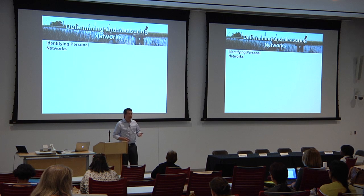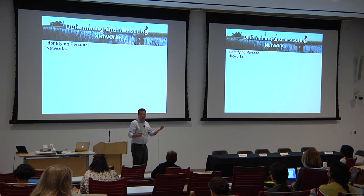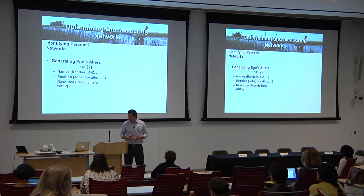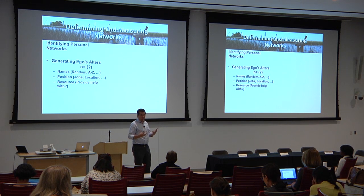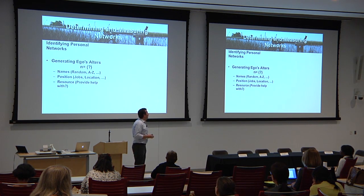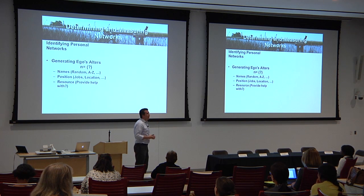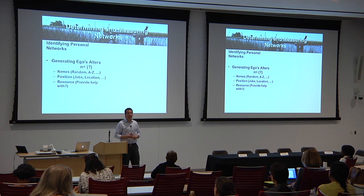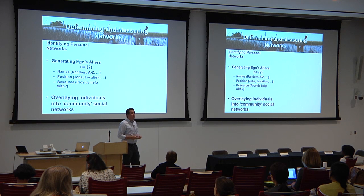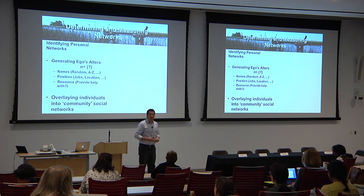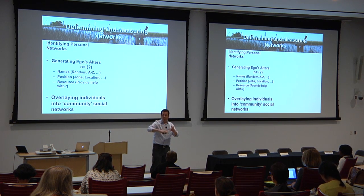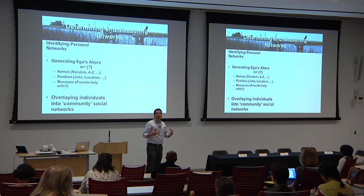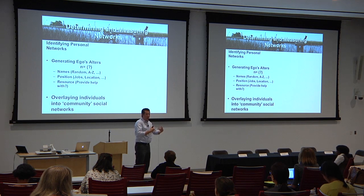The first step is to identify personal networks — how do I elicit from someone who they know? This is called an ego generator or alter generator. You can ask by name, by position, or as we use, a resource generator: give me the names of people who can help you in the face of a disaster or uncertainty. If you give me 30 names and another person gives 30 names, there may be five people in common between them. You can then generate a community network based on those overlays and talk about the density or structure of that network.